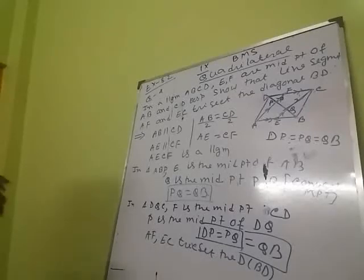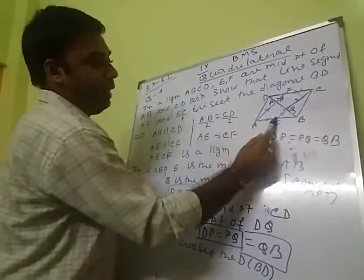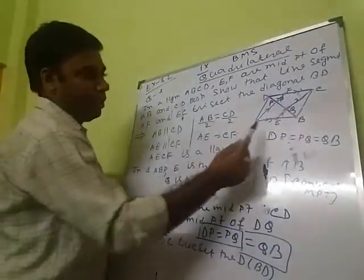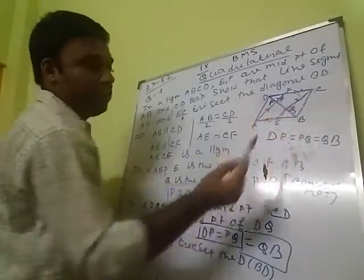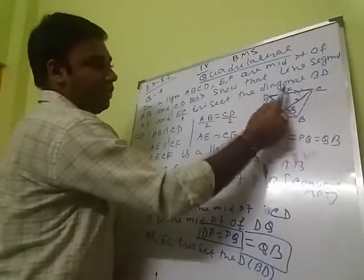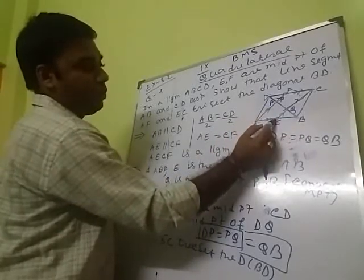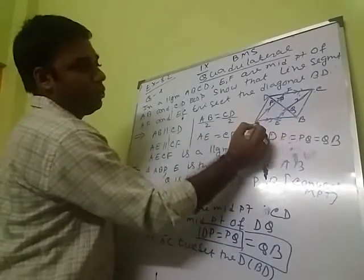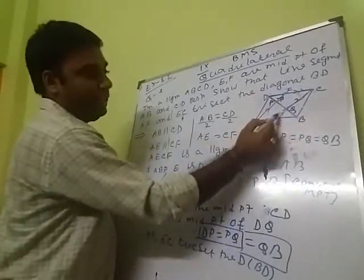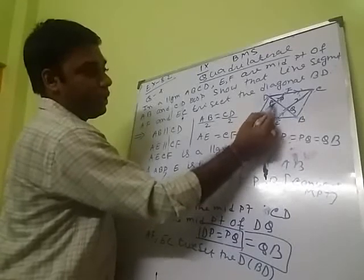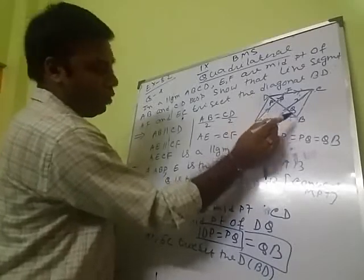Let me repeat from the beginning. AB is parallel to DC, which means AE is parallel to CF because they are parts of those lines. Also AB equals CD, so AE equals FC because E and F are the midpoints. Therefore AECF is a parallelogram. Next, consider triangle ABP: E is the midpoint of AB, and EQ is parallel to AP because AECF is a parallelogram, so ultimately Q is the midpoint of PB, giving BQ equals QB.